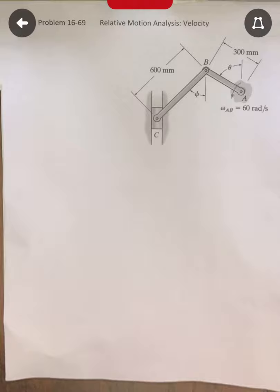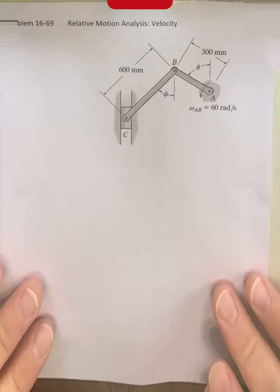We're going to be talking about instantaneous centers of zero velocity, and I'm going to do things a little different by doing the exact same problem I did in the previous video to show how we can use different methods to approach the same thing.